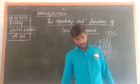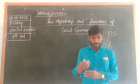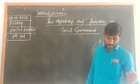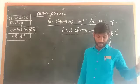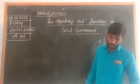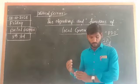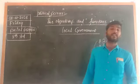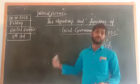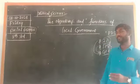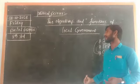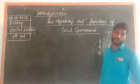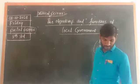The fourth function is to plan and undertake development works like laying of roads, electrification, housing, supply of drinking water, and street lights. These are the facilities provided by the local government through the Gram Panchayat.